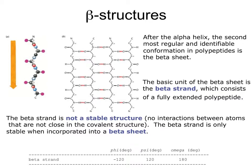After the alpha helix, beta structures are the next most predominant conformation. Beta structures or beta sheets are comprised of beta strands, which are essentially extended polypeptides. A strand alone is not stable — it becomes stable in a beta sheet where hydrogen bonding patterns stabilize it. Unlike the alpha helix which has internal hydrogen bonds, a beta strand alone does not. The phi, psi, omega angles for a beta strand are minus 120, 120, and 180 respectively, which students should know for exams.